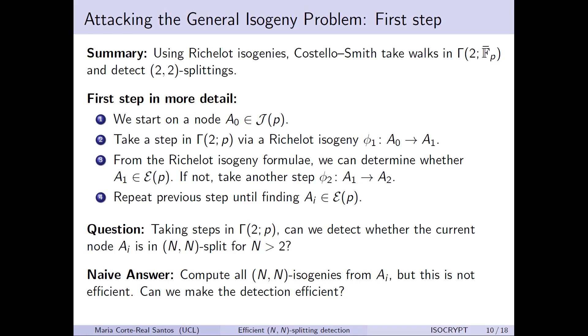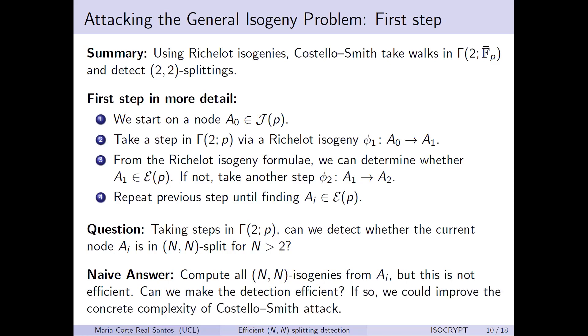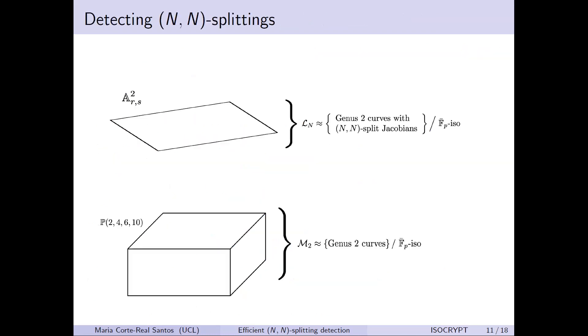Is there a way to make the detection more efficient? If so, you could hope to improve the concrete complexity of Costello-Smith in the same way that the supersolver paper improves on the Delfs-Galbraith algorithm.